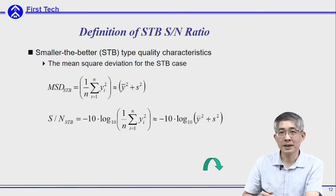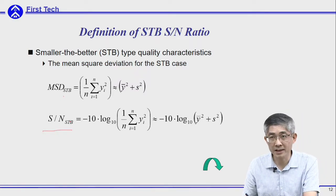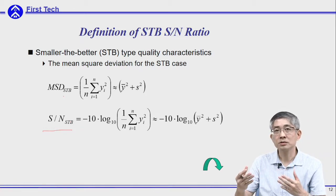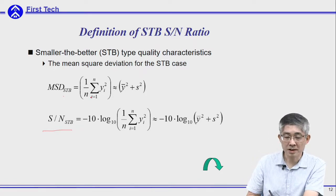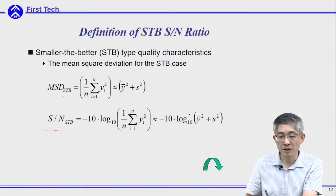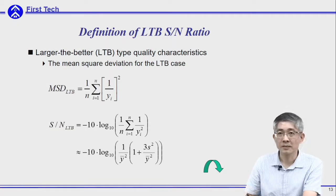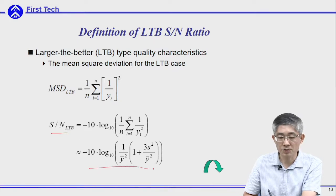For the smaller-the-better case, you can substitute the MSD into the equation and get the SN ratio for smaller-the-better. Unfortunately there is no distinct relationship like the previous nominal-the-best case, but using this as a design criterion you can still fulfill your requirements for average output and conformance. Similarly, this is the SN ratio for the larger-the-better case — again you substitute your mean square deviation into the logarithm transformation.